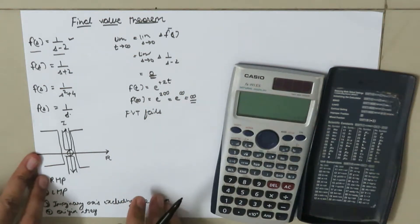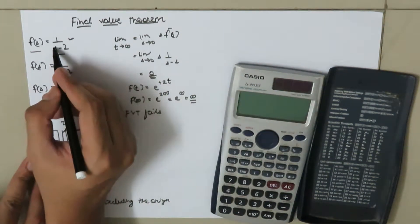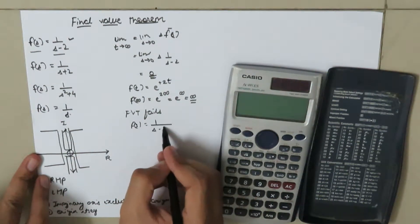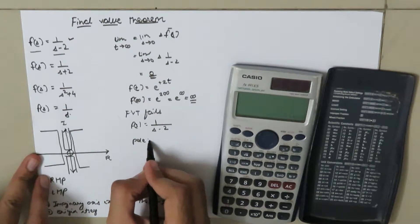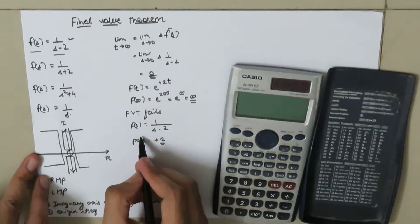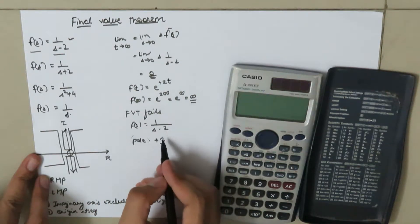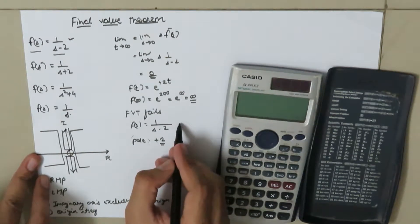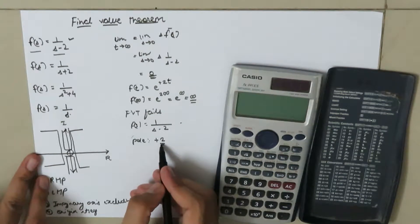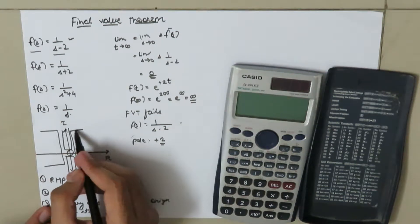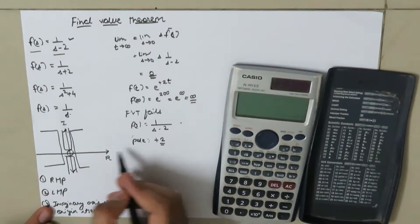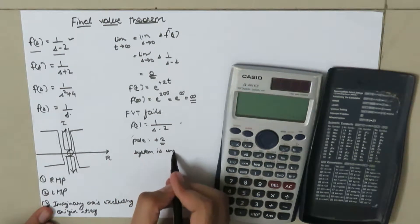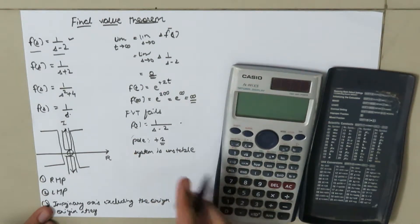This failure happens because F(s) equals 1 over (s minus 2) has a pole at positive 2, which lies in the right half plane. The pole is the value that makes the denominator zero and tends the function towards infinity. When the pole lies in the right half plane, the system is unstable, and therefore the final value theorem fails.